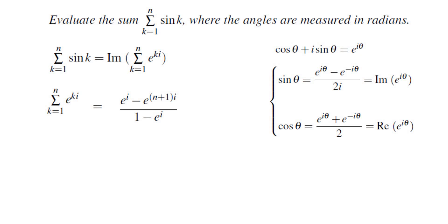So if you use the formula for the geometric sum, we would get e to the power of i minus e to the power of n plus 1i, which is the term after the last term, over 1 minus the common ratio of e to the power of i.